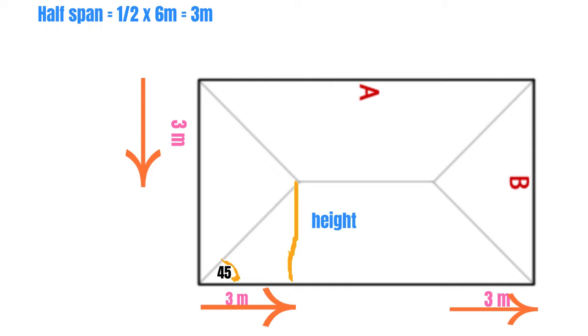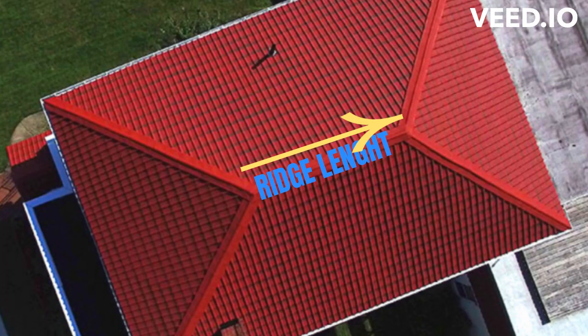The same height here is 3 meters. Now let's calculate the ridge length: that will be 15 meters subtract 3 meters on this side and 3 meters on the other side, giving us 9 meters.